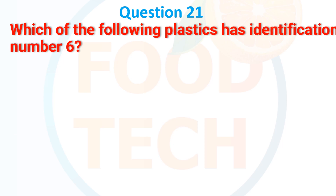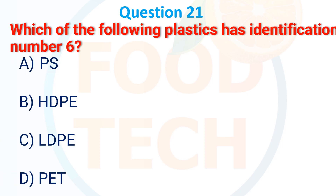A) PET, B) PVC, C) PP, D) PS. The answer is D) PS. Which of the following plastics has identification number 6? A) PS, B) LDPE, C) LDP, D) PET. The answer is A) PS.